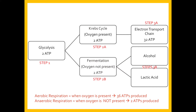To recap all of cellular respiration before we look at the different steps: the first step is always glycolysis. No matter what, it's always glycolysis, and this actually takes place in the cytoplasm — so outside of the mitochondria. Two ATP or two energy molecules are made here. Then it will take one of two routes — either step 2a where oxygen is present, or step 2b where oxygen is not present.